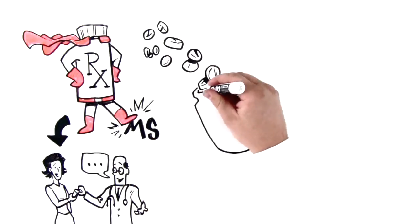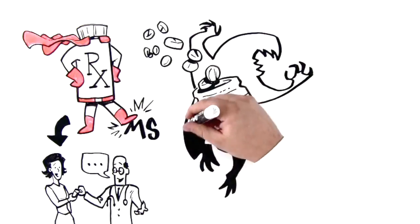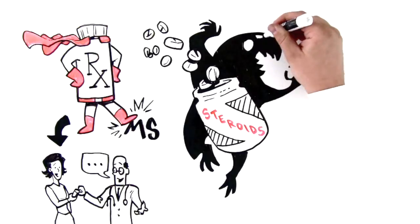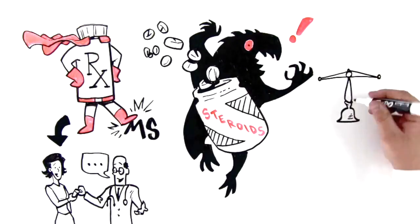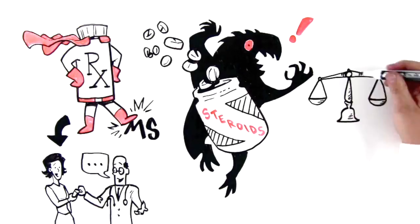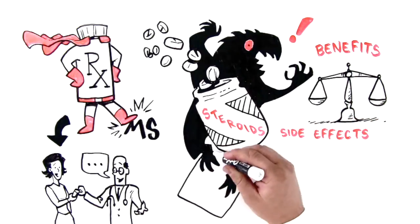Your doctor may prescribe steroids for any acute relapses or one of the more potent drugs available if the disease is very active. Drug therapy can be effective in certain cases, but you should always make sure to carefully weigh the potential benefits against any side effects, some of which can be serious.